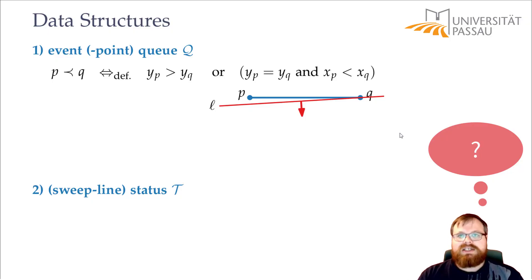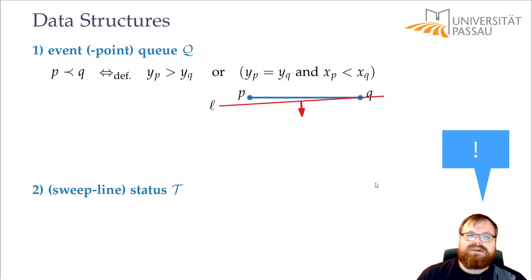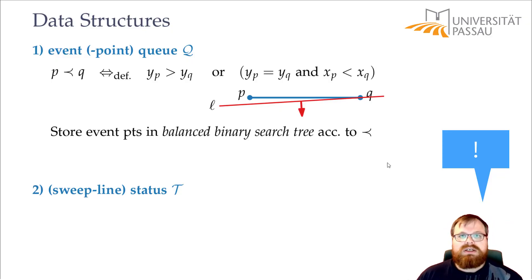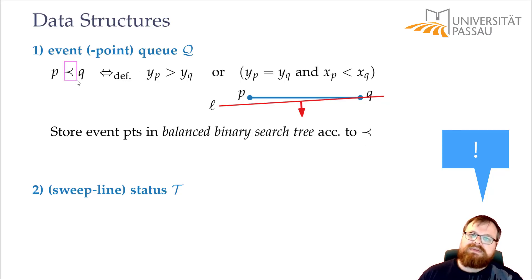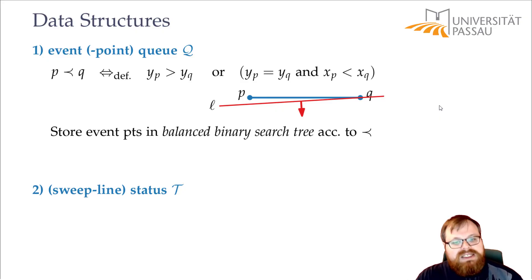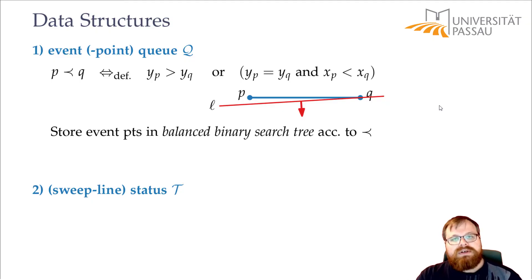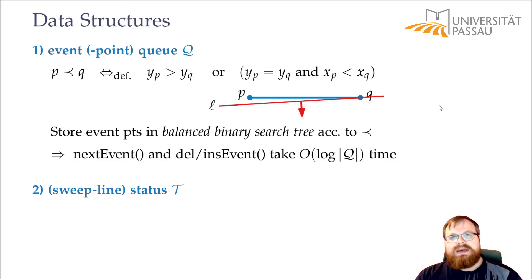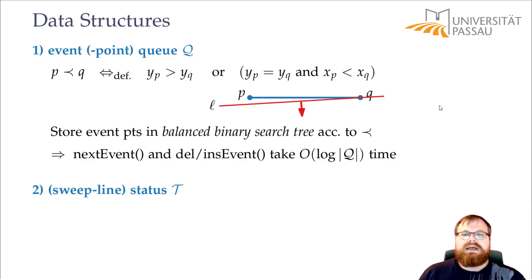Now we can decide which data structure to use for the event point queue. The answer is a balanced binary search tree — a red-black tree, AVL tree, 2-3-3, or whatever you prefer. We store it in the order defined by the precedence relation we just defined. At every step we can find the next event, delete events, and insert new events in time logarithmic in the number of points in the queue.